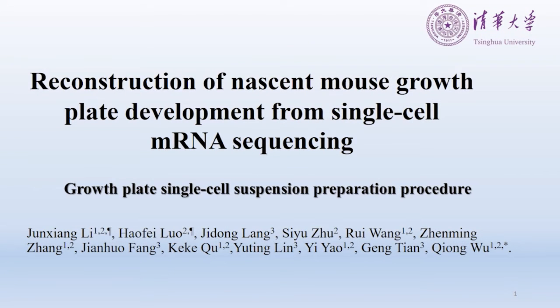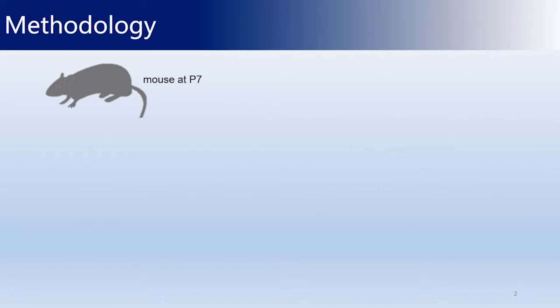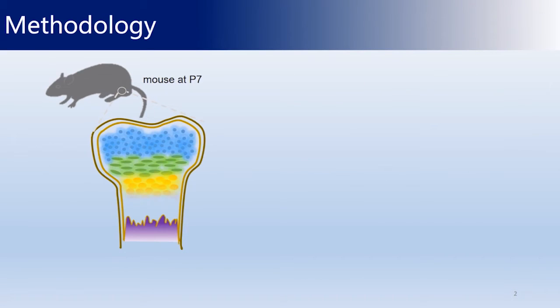The growth plate is composed of at least four hierarchical zones which are aligned along the longitudinal aspects of the bone. The proliferative chondrocytes gradually differentiate into pre-hypertrophic chondrocytes, followed by hypertrophic chondrocytes.